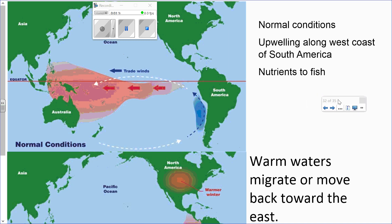Under normal conditions, upwelling occurs along the west coast of South America. When there is a large movement of surface water, that water is displaced and needs to be replaced by another mass of water. That replacement water comes from the depths of the ocean — this is what we call upwelling. Upwelling is a mass of water rising from deeper within the ocean toward the surface, and as this colder water upwells, it brings nutrients to the surface.